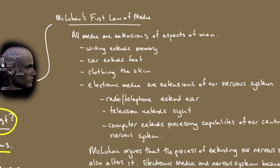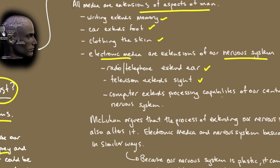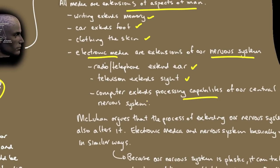In the book, they talk about McLuhan's first law of media. What this is about is that media are extensions of aspects of man. For example, writing extends memory, car extends the foot, clothing the skin. Electronic media are extensions of our nervous system. Radio, telephone extending the ear, television extending sight, and computer now extending our processing capabilities of our central nervous system.